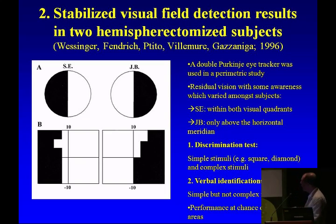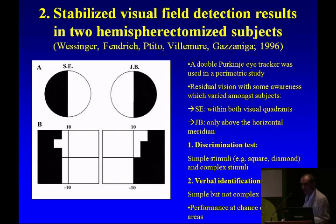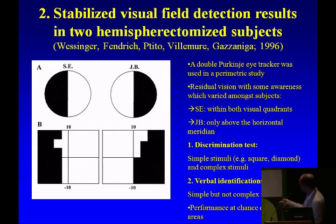The stabilized visual field detection showed no macular sparing on conventional testing. But with the stabilized perimeter, there is an island of sparing along the macular region extending into the blind field for two subjects. In one subject, a quadrant is totally blind but there are visual abilities in another region extending into the blind field. However, in certain areas the subject is reporting not seeing anything.